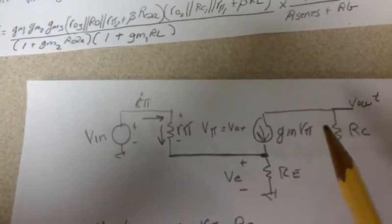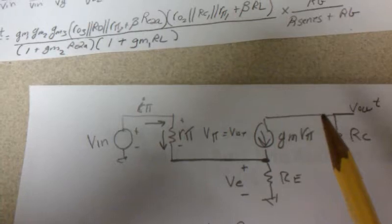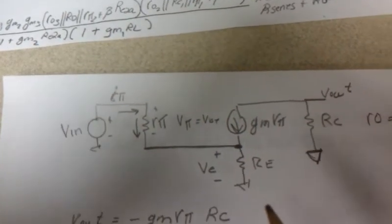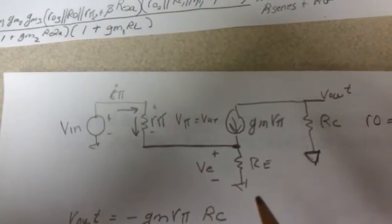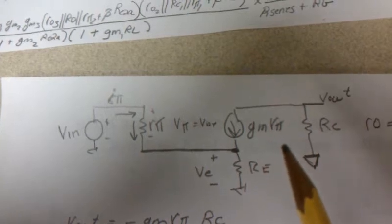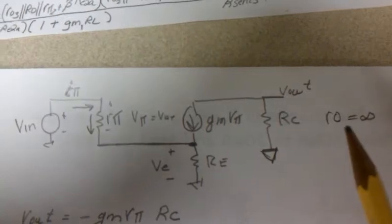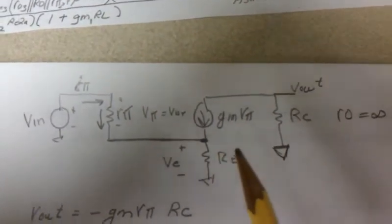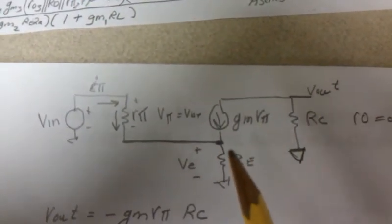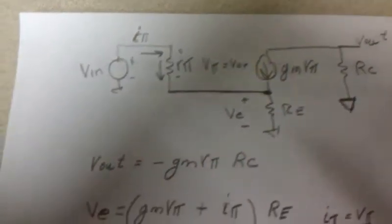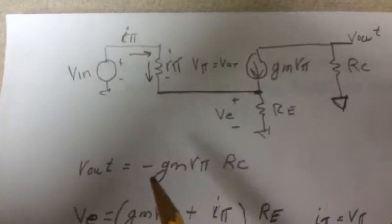In this case we've neglected the collector to source resistance or set it to infinity to make the math easier. So the first equation is V out equals minus GM V pi RC, pretty standard.